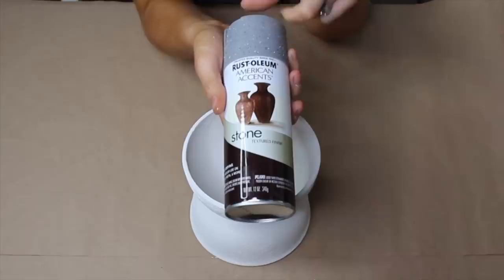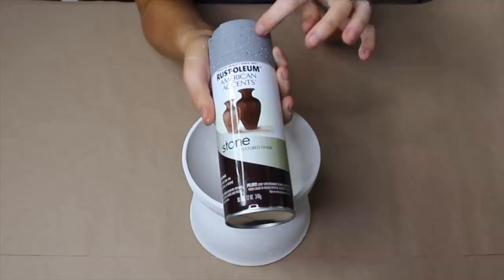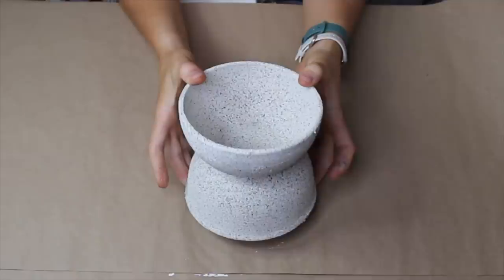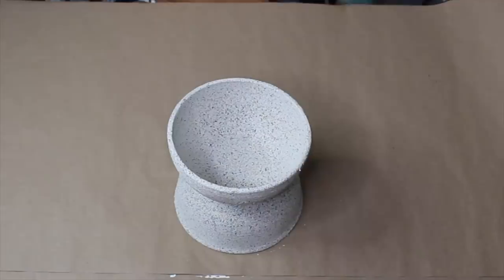We're going to be using a stone colored Rust-Oleum textured finish paint. You can see this kind of finish on the cap is essentially the color we're going with. I'm going to be adding this lightly to my bowls. I also have one in pebbles, so I'm going to be doing a little bit of both.